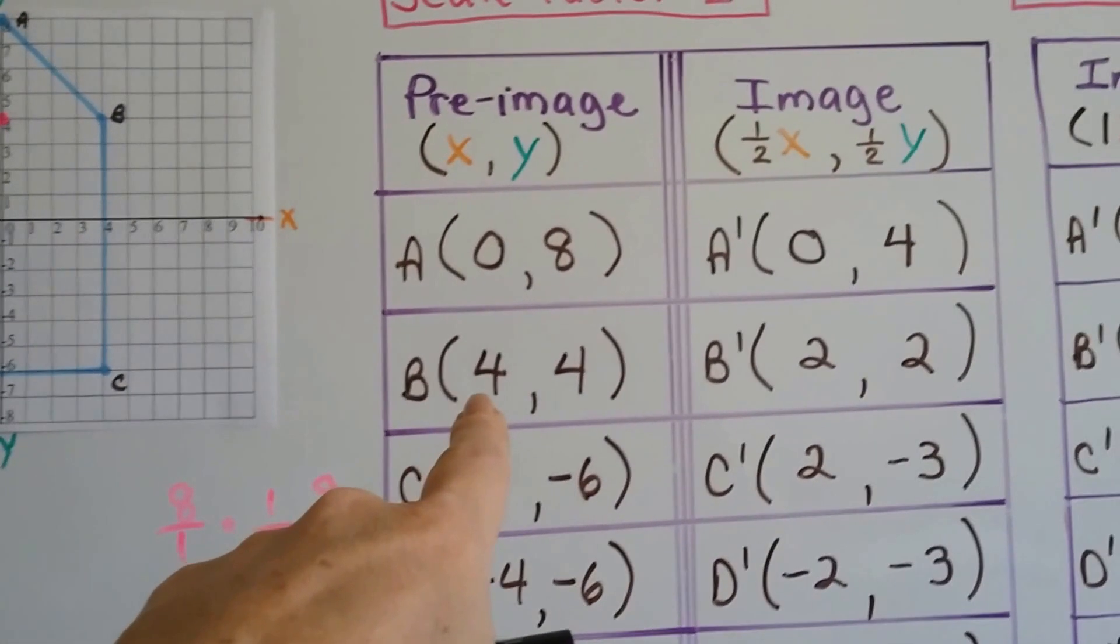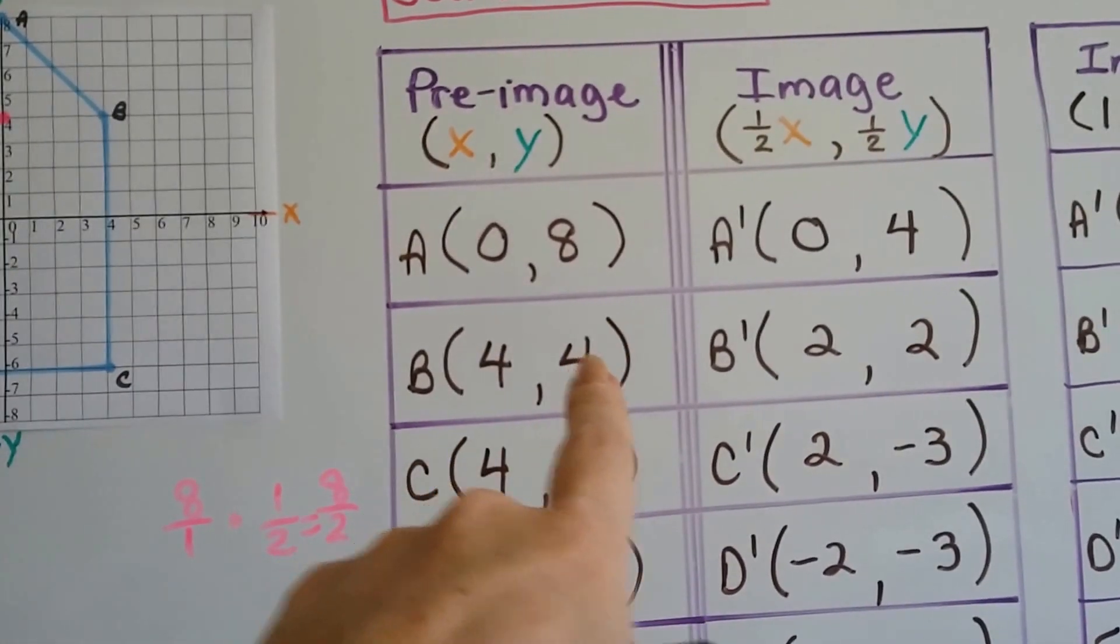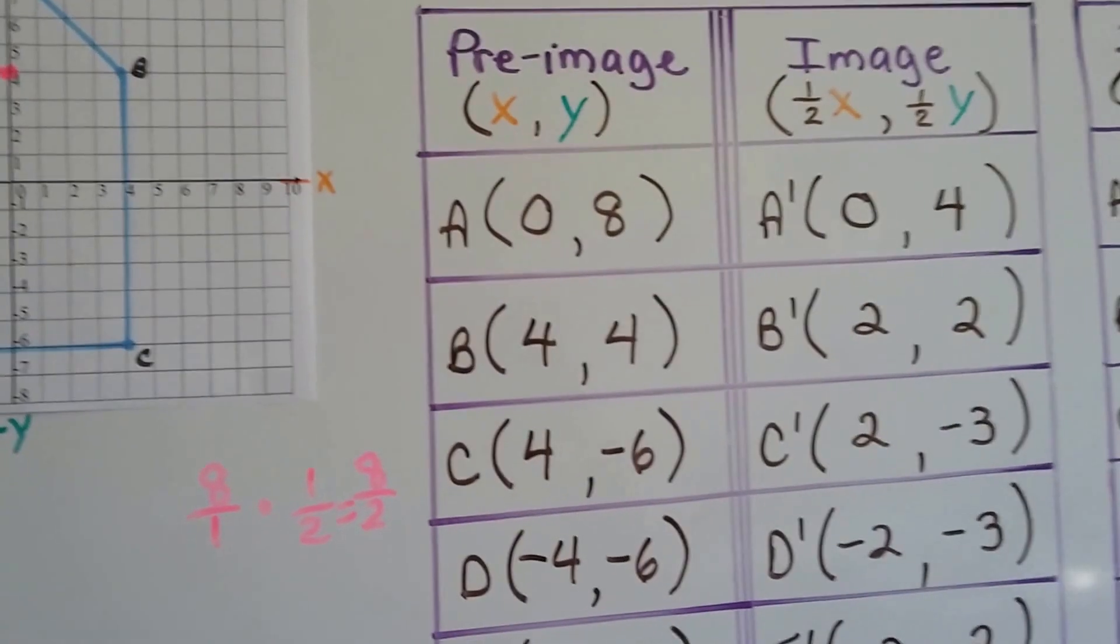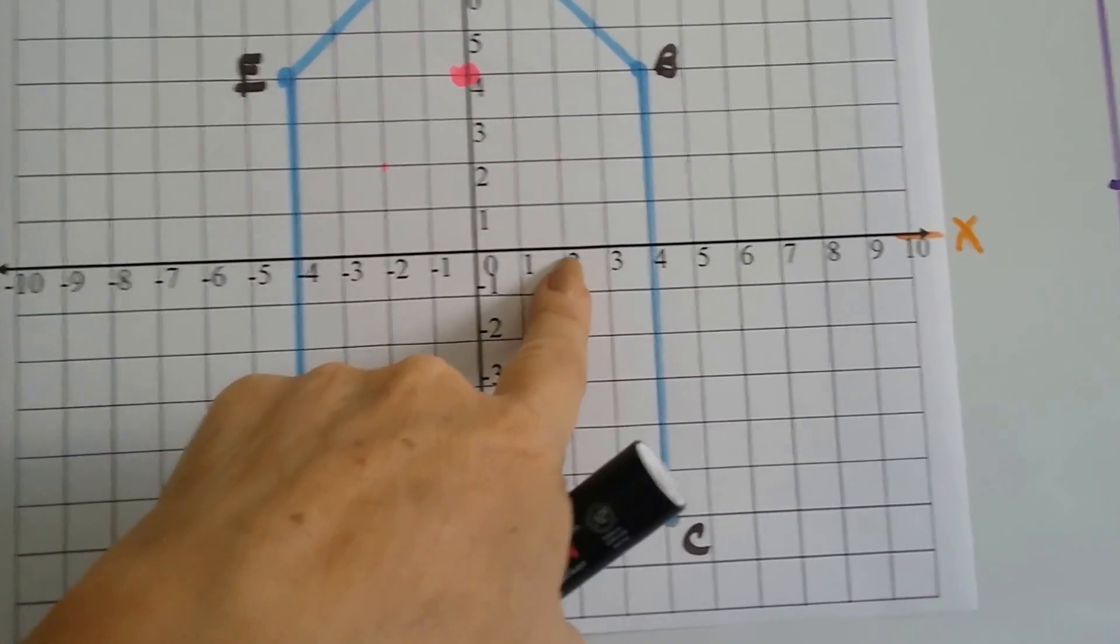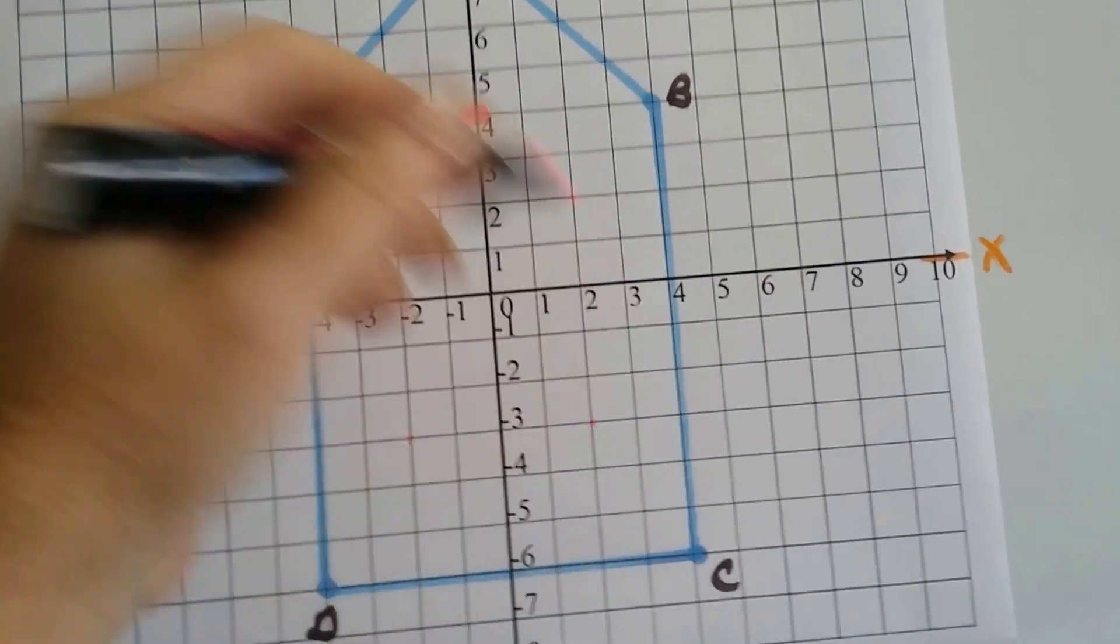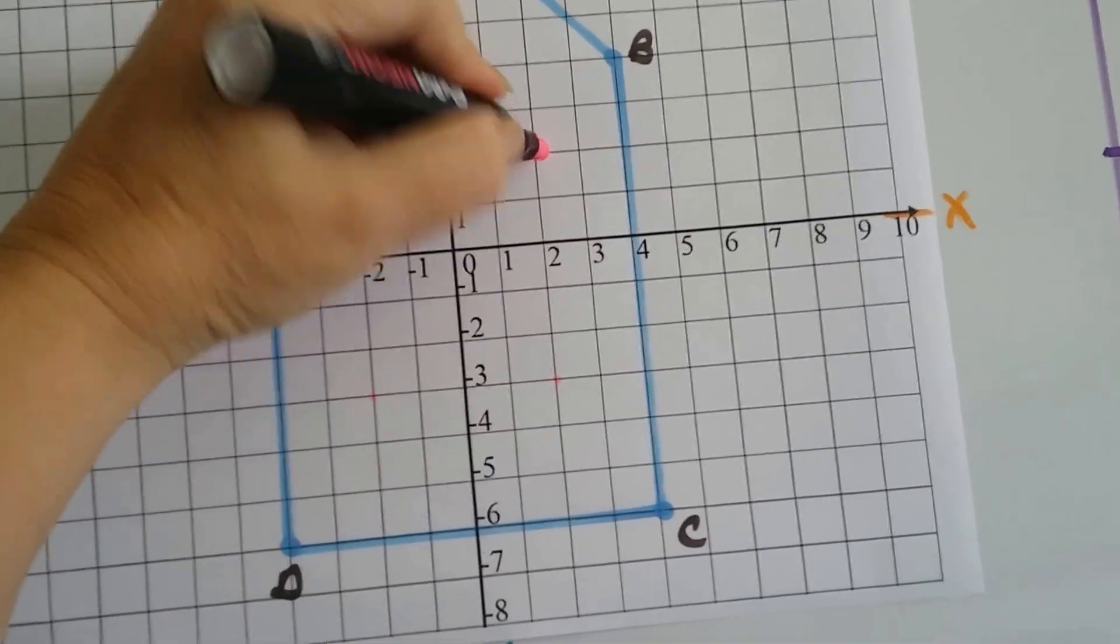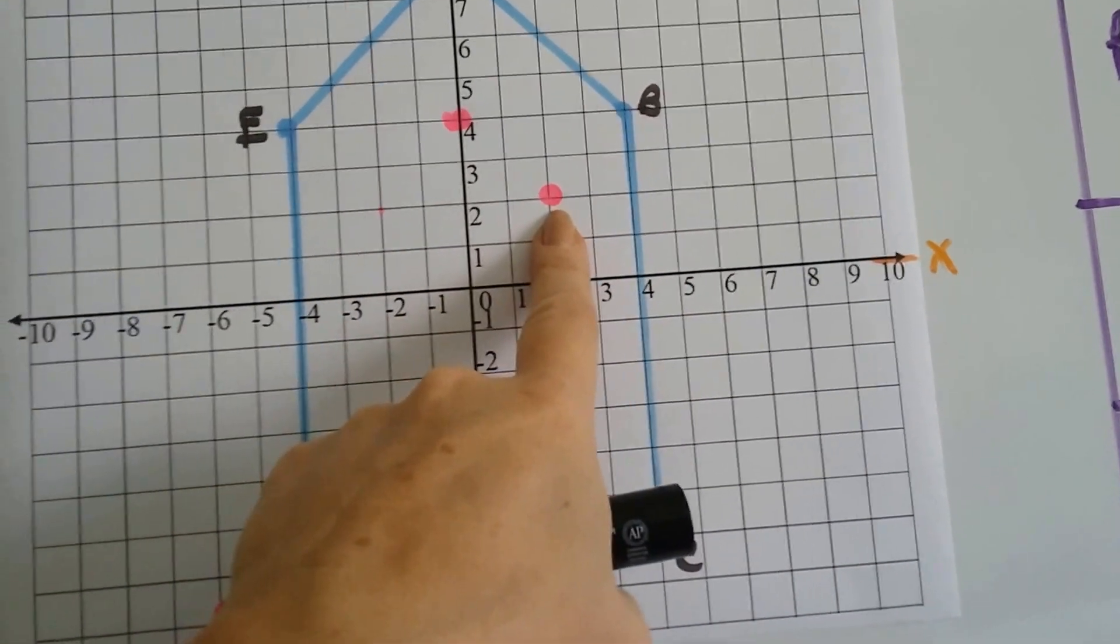We know b prime is going to be half of 4 and half of 4. So that's going to be a 2 and a 2. So it's positive 2, positive 2 for b prime. And here's positive 2 on the x and positive 2 on the y. So our new spot for b prime is going to be right here for the image.